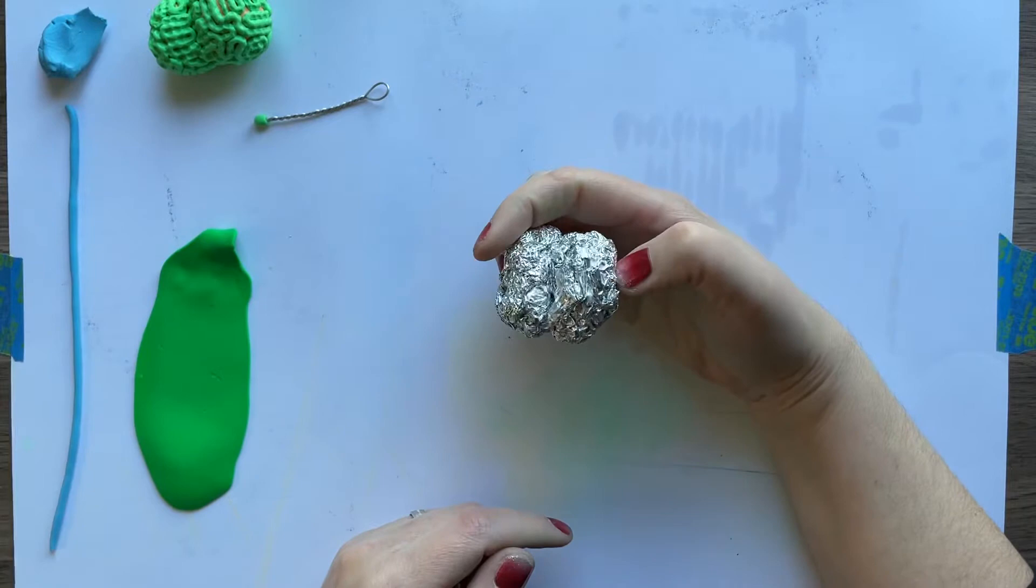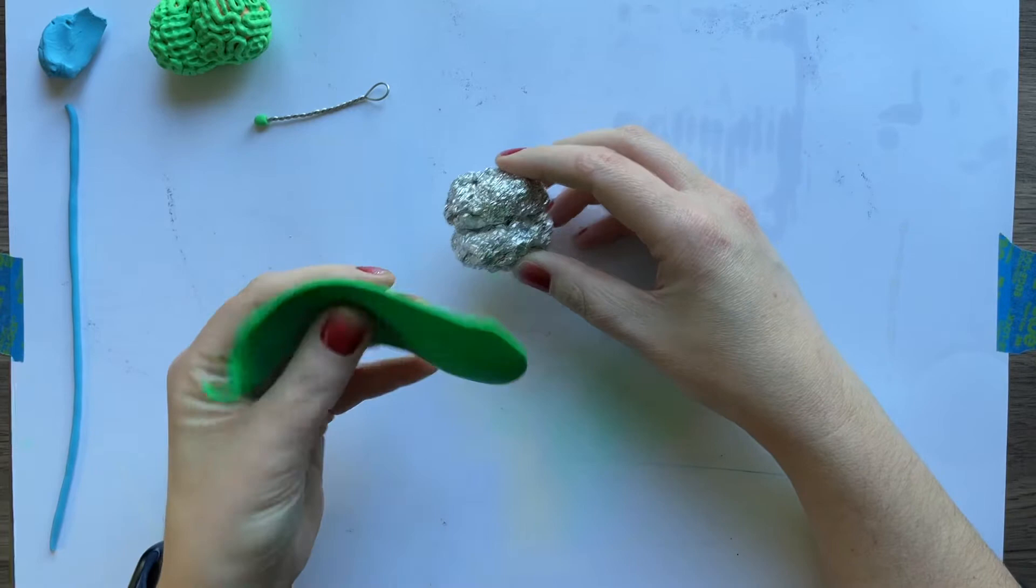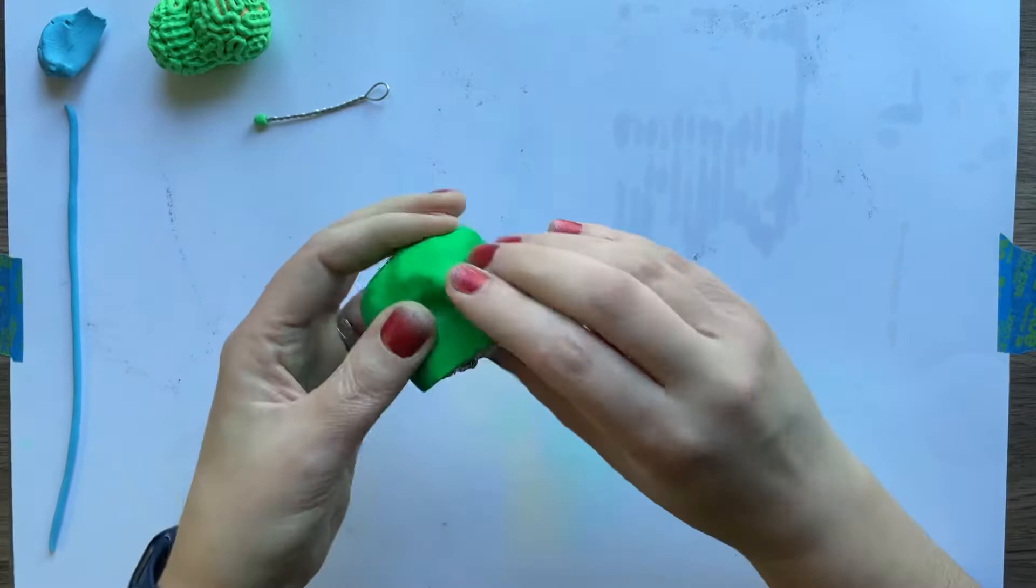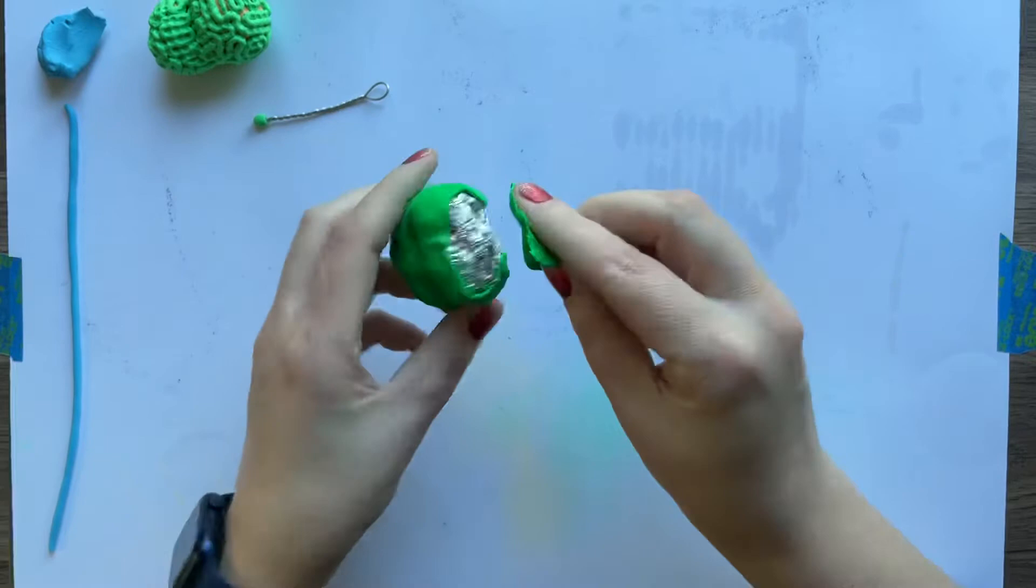Then you're going to take a slab—this is one popsicle stick thick—and you're going to push it over the top of your armature. If you have extras, if you have enough, you can cover the very bottom of it, or you can tear some of it off and stick it back over the other places.